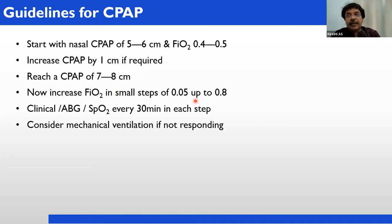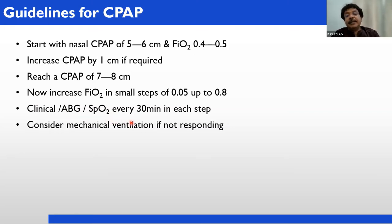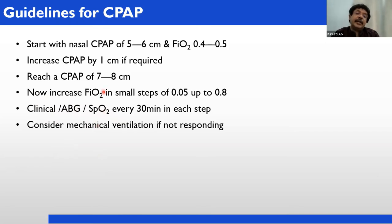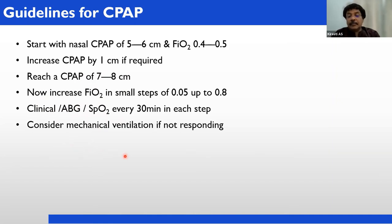Increase FiO2 in increments of only 5% — from 10 to 15 to 20 to 25 percent, and so on. Monitor ABG and SpO2 every 30 minutes on each step. If ABG is available, you can do ABG; otherwise monitor saturation clinically. If the child is not responding and requires more than 8 centimeters pressure, that is CPAP failure, then connect the baby to mechanical ventilation.